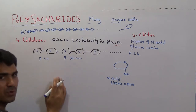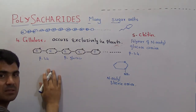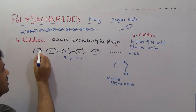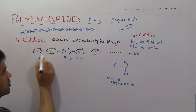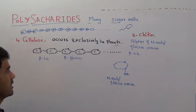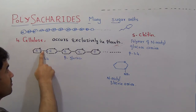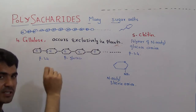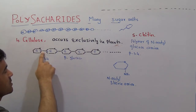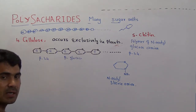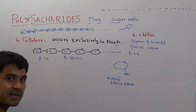The 1,4 means carbon number one of one sugar and carbon number four of the other sugar make a bond — that's why we use the term beta 1,4. This bond carries very great importance because this kind of polysaccharide cannot be digested by the enzymes of the human body like amylase.